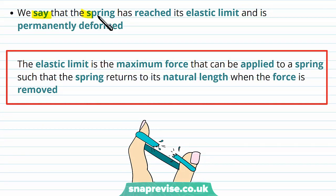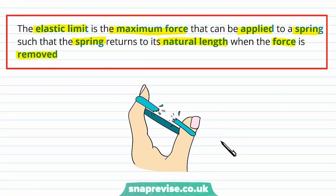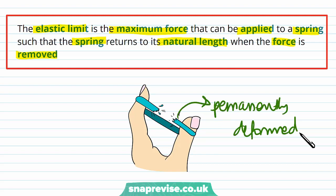In this case we say the spring has reached its elastic limit and is permanently deformed. The elastic limit is the maximum force that can be applied to a spring such that it still returns to its natural length when the force is removed. Applying a force beyond the elastic limit means the spring won't return to its natural length — just like breaking an elastic band, which is permanently deformed and won't return to its original shape.